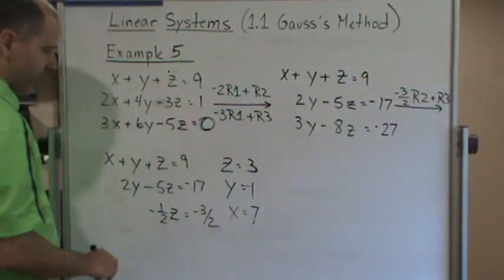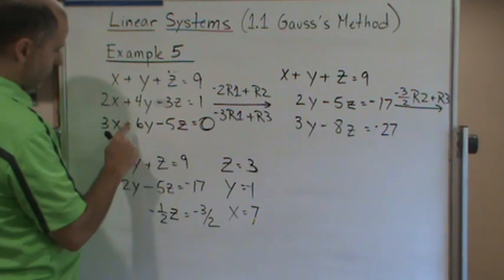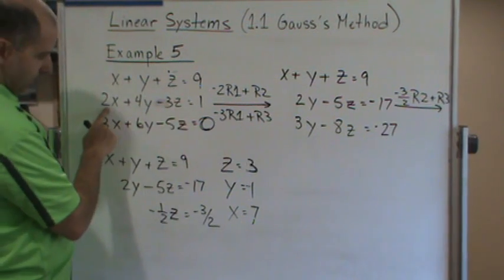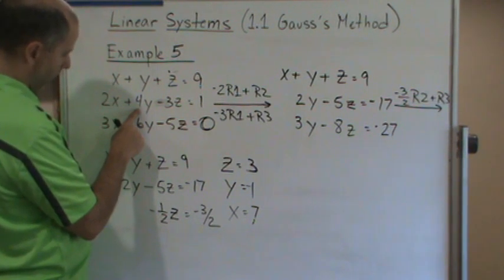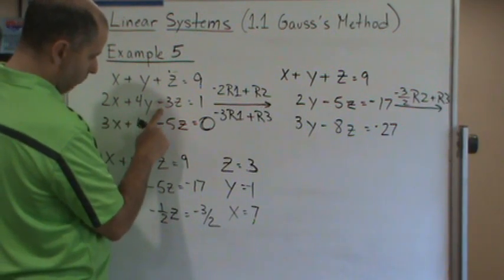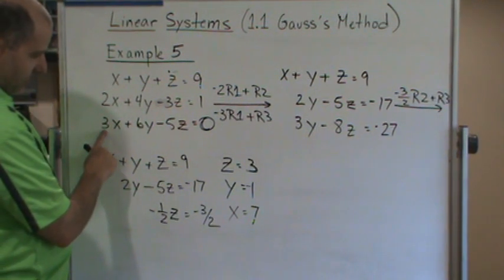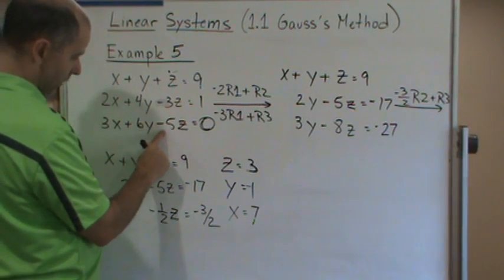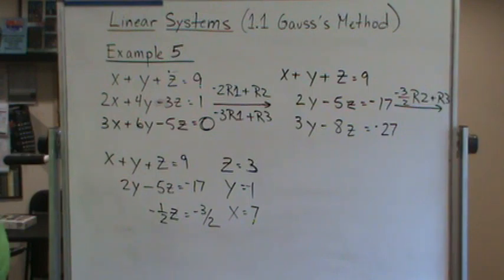Let's verify by plugging x equals 7, y equals negative 1, z equals 3 into all three original equations. First: 7 minus 1 plus 3 equals 9. Check. Second: 2 times 7 is 14, plus negative 4 is 10, minus 9 is 1. Check. Third: 3 times 7 is 21, minus 6 is 15, minus 15 is 0. Check. Everything works out. Have a great day!